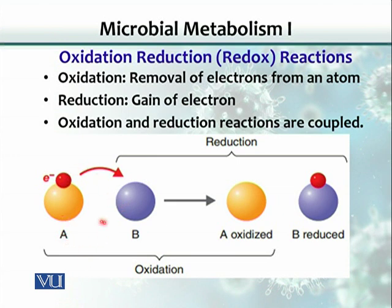In this example, substance A is donating an electron to substance B. When A loses its electron, it becomes oxidized. The substance that gains the electron — substance B — has been reduced.